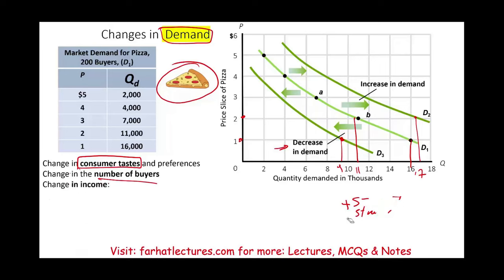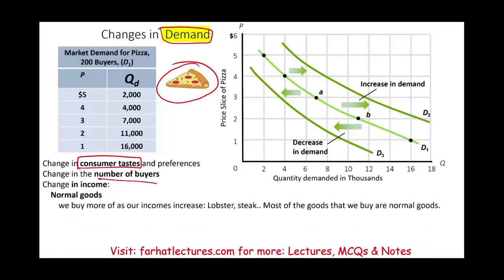Another reason that could shift the demand left or right is a change in income. Are you making more money or less money? When it comes to change in income, we have to differentiate between two types of goods: normal goods and inferior goods. Normal goods are goods that we buy more of as our income increases — for example, if we have more money, we might consume more lobster or steak. We buy fewer normal goods when our income decreases because we cannot afford them.